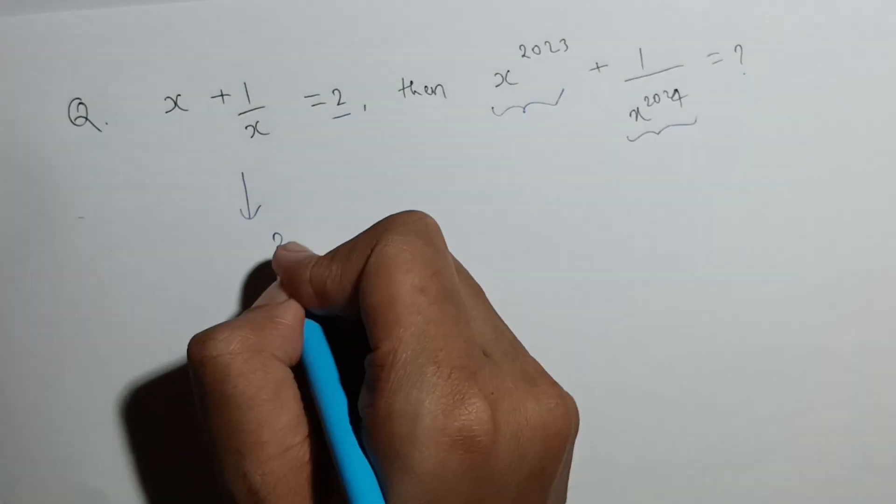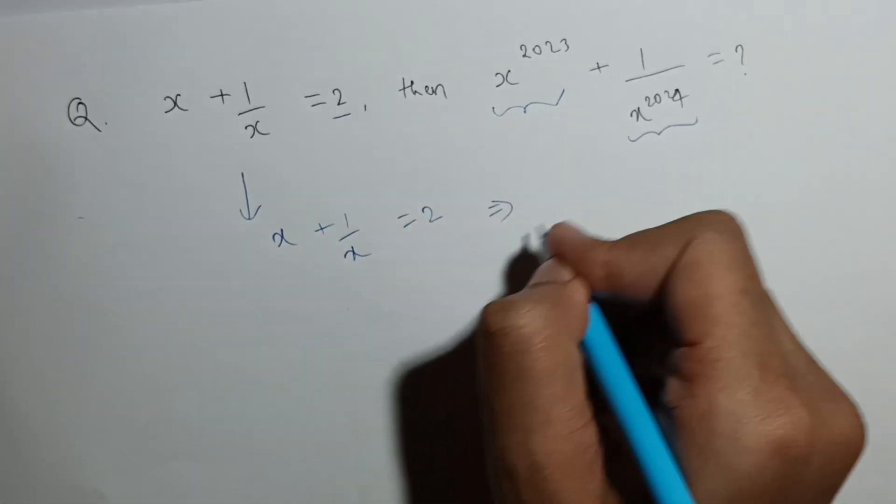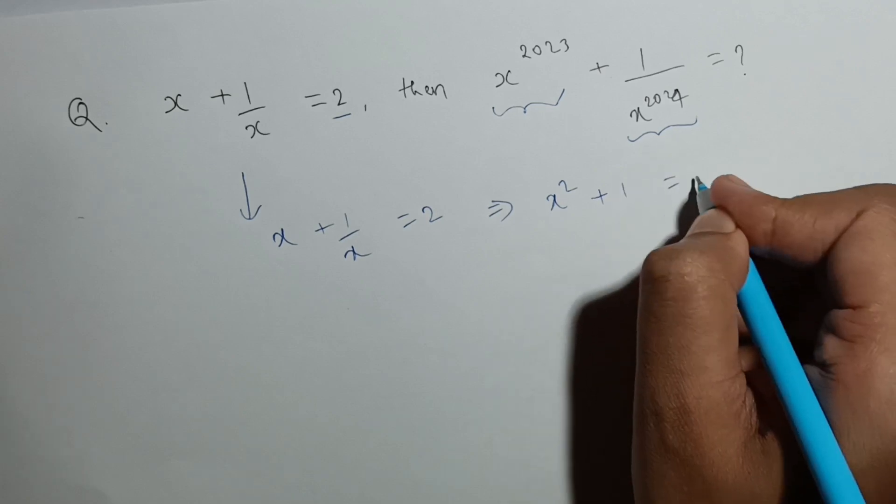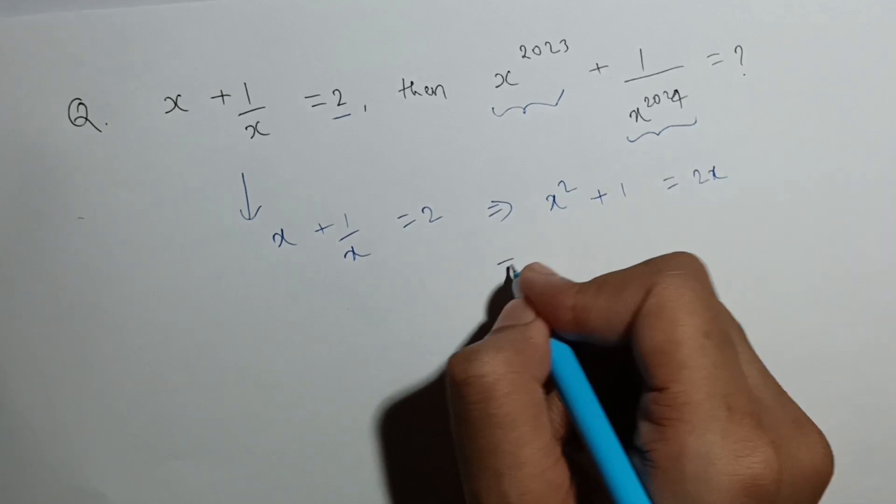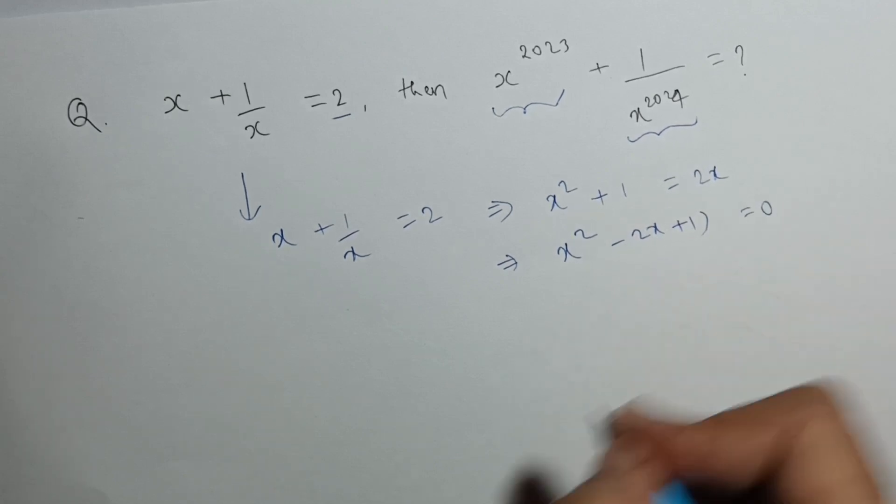So we have x plus 1 by x equal to 2. Now can I rewrite this as x square plus 1 equal to 2x. Now from here I will get x square minus 2x plus 1 equal to 0.